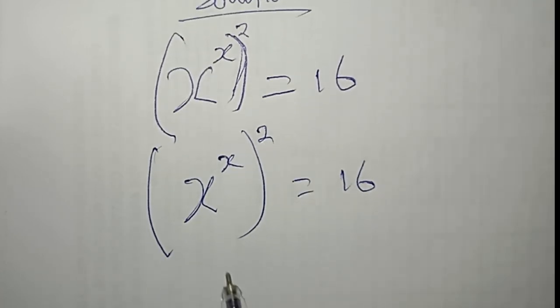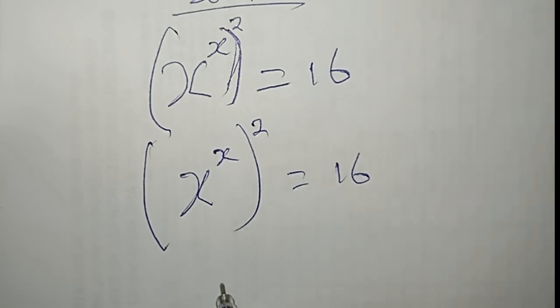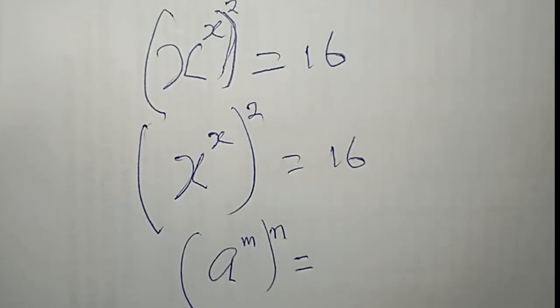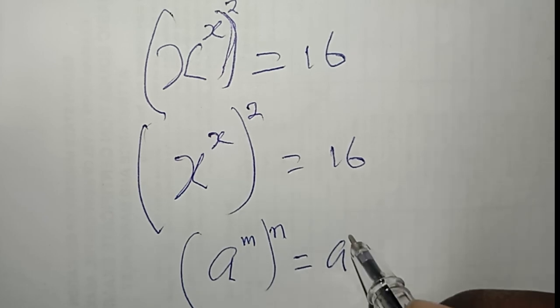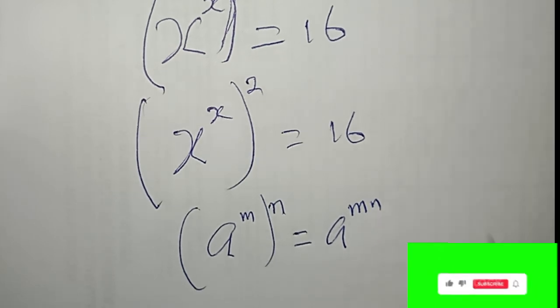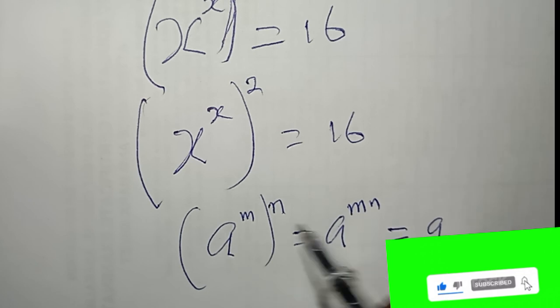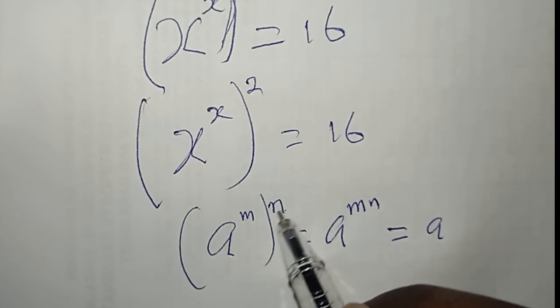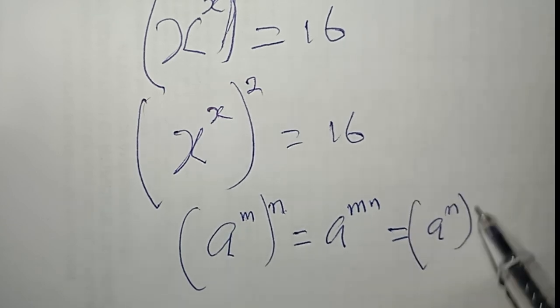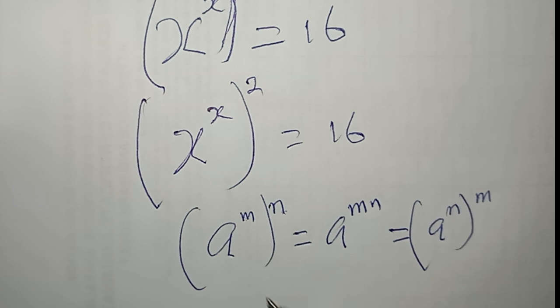Next, you remember one of the properties of indices, which basically says that if you have a^m then power n, you can actually write this as a^(mn). Or you can also switch these variables, so you bring in the n and then bring out m. So this is the same as this.